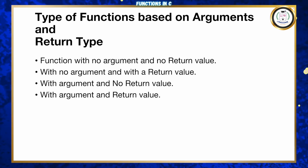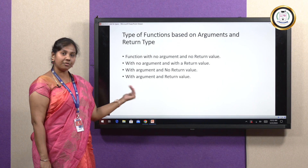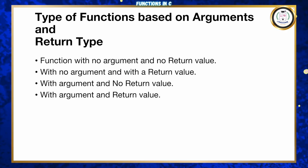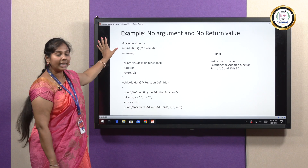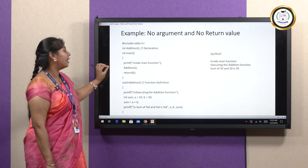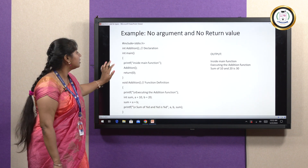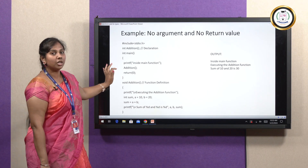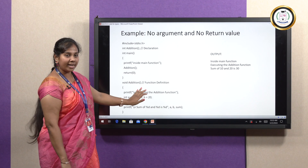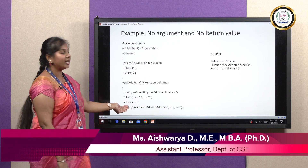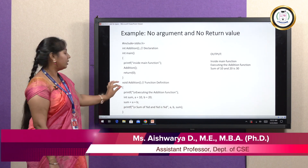We have four types of functions: functions with no arguments and no return value; functions with no arguments but with a return value; functions with arguments and no return value; and functions with arguments and a return value. Let's look at the first type. Here I have created a function to do addition. I declare the function, and in the main part there is a printf statement that prints 'inside main function', and then I call the function called addition — with no argument and no return value.